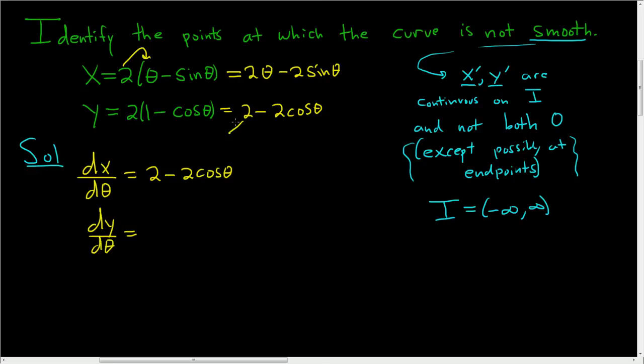The derivative of 2 is 0, and the derivative of cosine is negative sine. So we get -2 times -sin θ, which is 2sin θ.